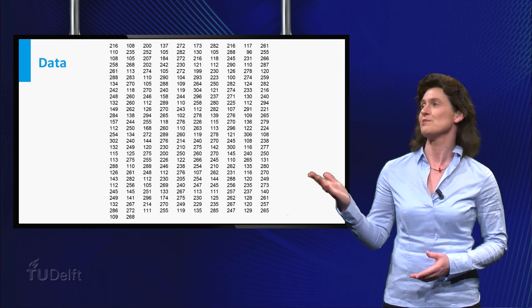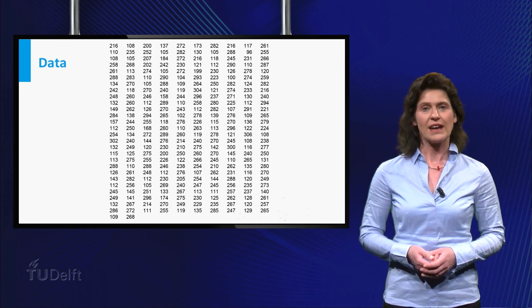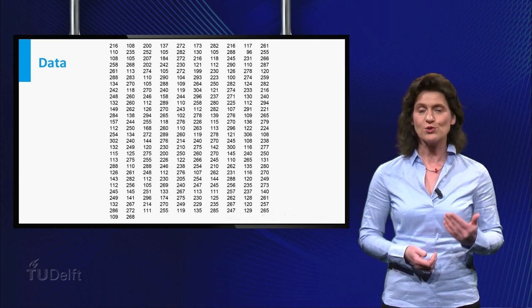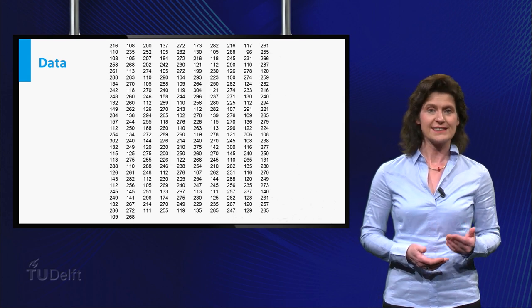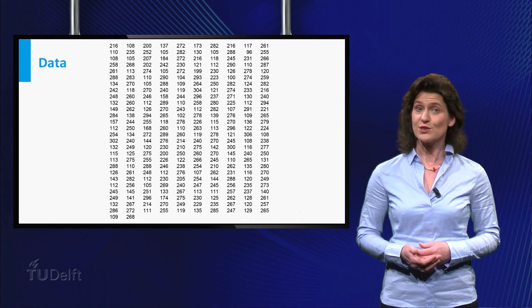Here you see some data. You don't know what these numbers mean, I'll tell you later, but have a look at them anyhow. Is there a value around which most of the numbers are concentrated? Can you divide the data set into two parts that contain half of the observations? Hard to answer, right?